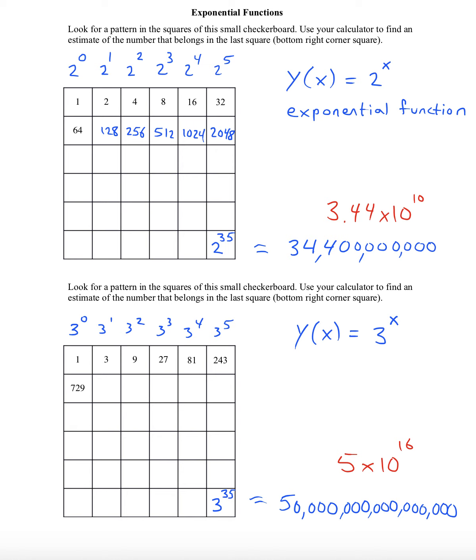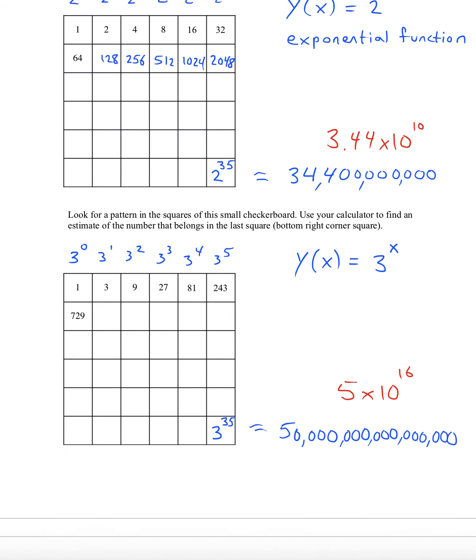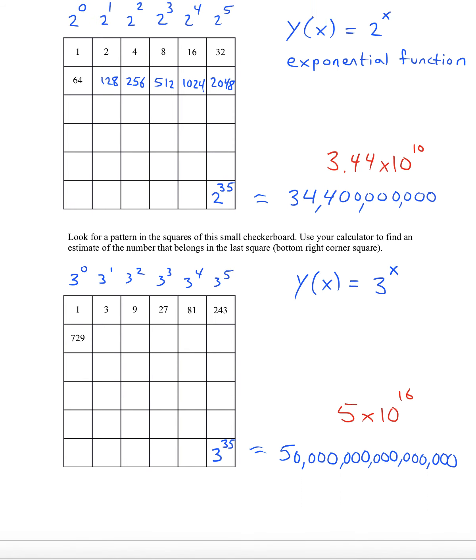We can figure out how many times larger the last square is with a base of 3 versus a base of 2. So an easy calculation to do would be just 5 times 10 to the 16 divided by 3.44 times 10 to the 10. And on calculator, we can actually write that as 5e16 divided by 3.44e10.